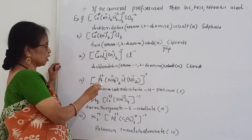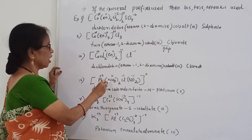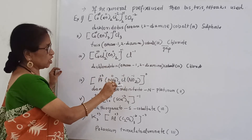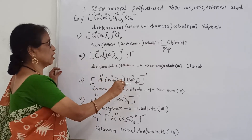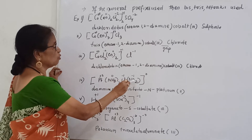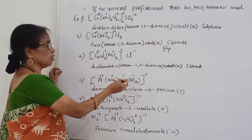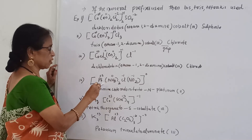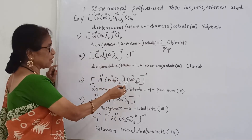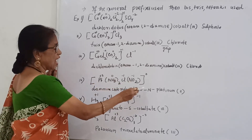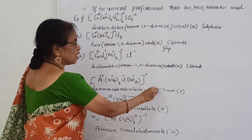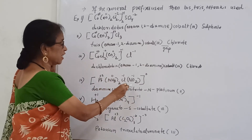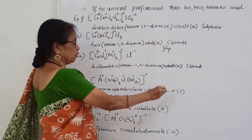Next example: [Pt(NH₃)₂(Cl)(NO₂)] — a neutral complex (charge 0). NH₃ is 0 (neutral), Cl is −1, NO₂ is −1. Platinum charge: 0 − (−1) − (−1) = +2. Alphabetical order: amine (A), chlorido (C), nitrito-N (N) — since N is the coordinating atom. The name is: diaminechloridnitrito-N-platinum(II). This is a neutral complex so no counter ion and no gap needed.